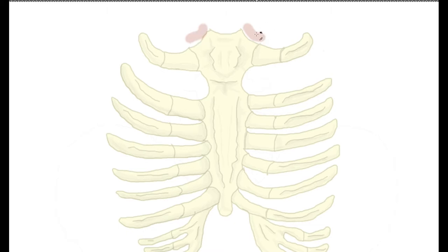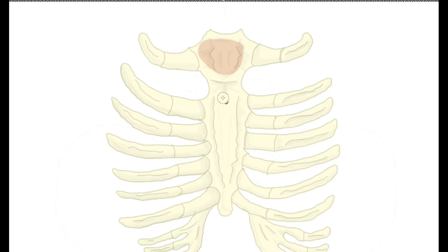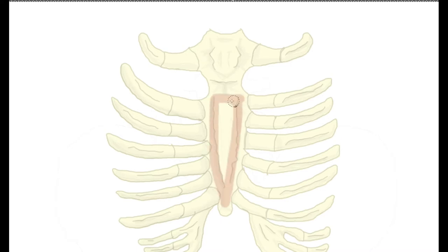We then have two notches on the sides for the clavicles, called the clavicular notches. Looking at the sternum, it kind of looks like a tie. The knot of the tie is called the manubrium, and the actual body — the bigger dangling part of the tie — is called the body. What connects the body and the manubrium together is a little angle called the sternal angle.